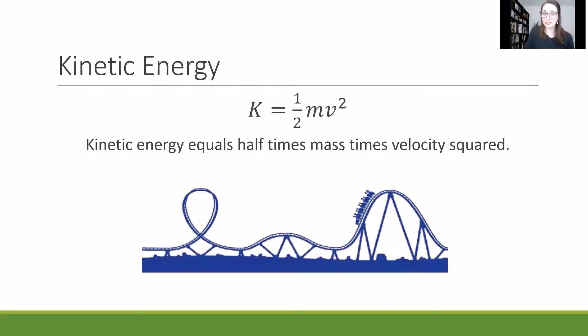For kinetic energy, we see K for kinetic energy equals half times M times V squared. So the way we can read that is kinetic energy equals half times mass times velocity squared. So M for mass, V for velocity. Kinetic energy, I like to think of like a roller coaster. It's your moving energy.